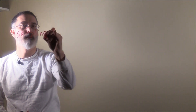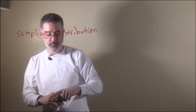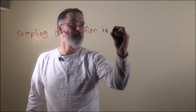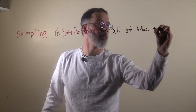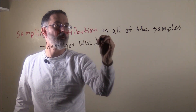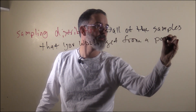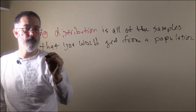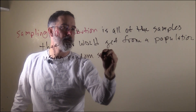For all of the inferential statistics that we do, we are going to be using something called a sampling distribution. Each test will have a sampling distribution. A sampling distribution is all of the samples that you would get from a population when you are using random sampling.